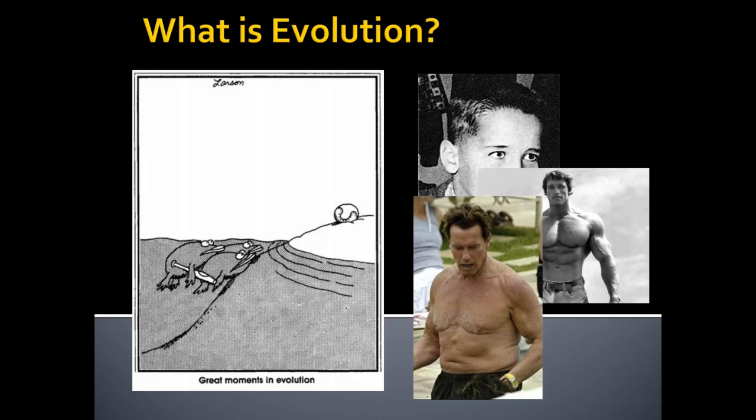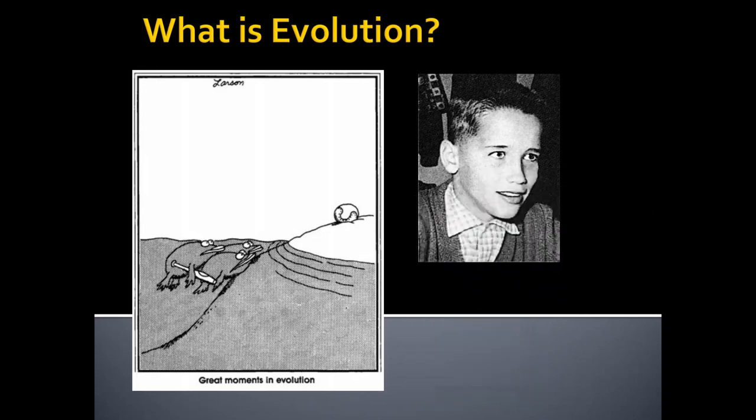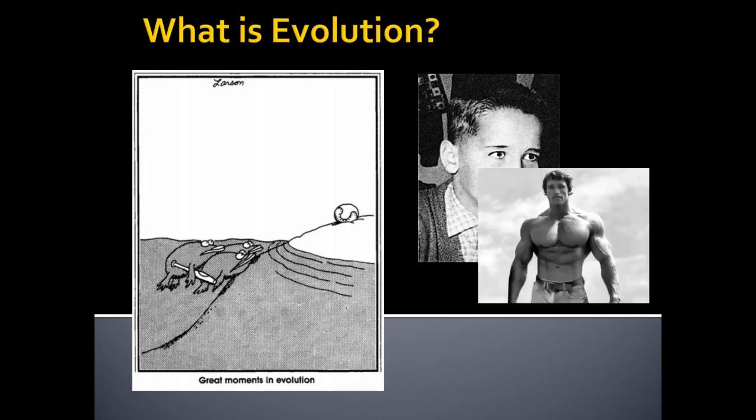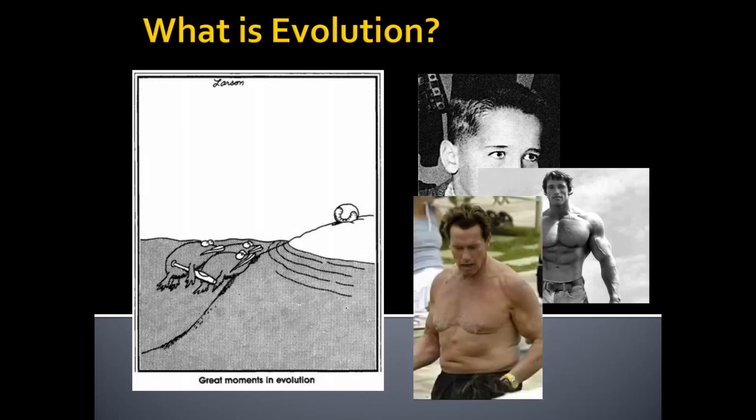But if we look at the change in an individual organism — like Arnold Schwarzenegger, for example — whether that's maturation, aging, or any other process by which the physical individual changes, that in and of itself is not evolution. The reason is that we are missing that second key component.